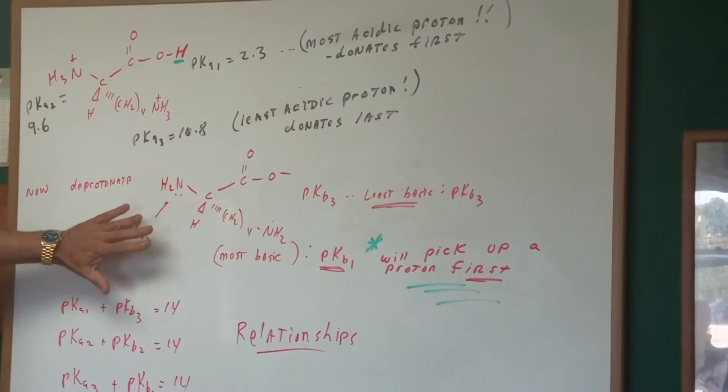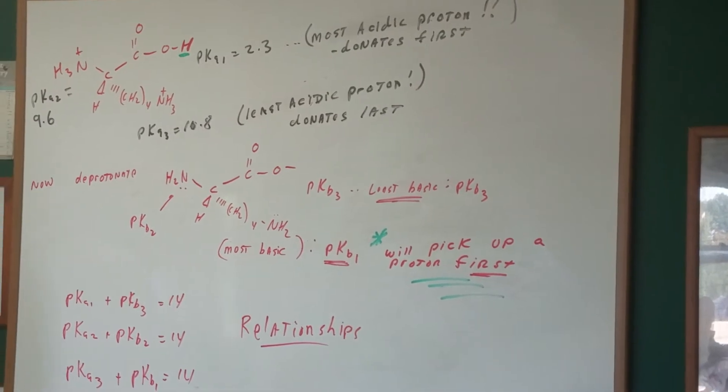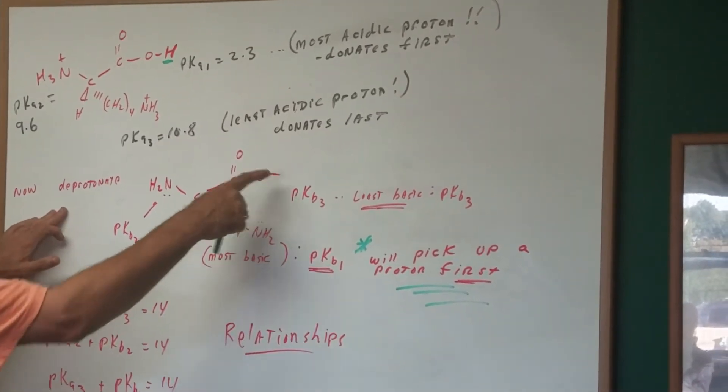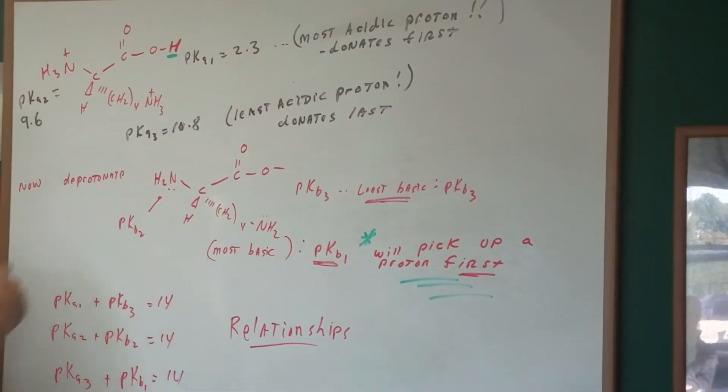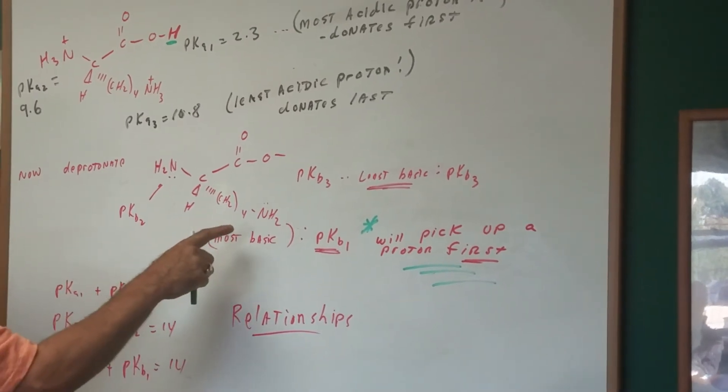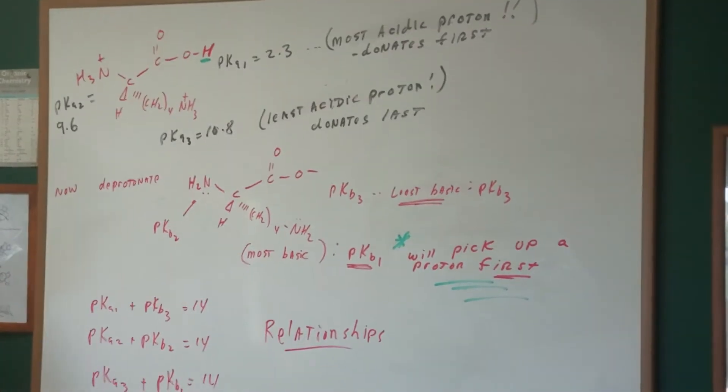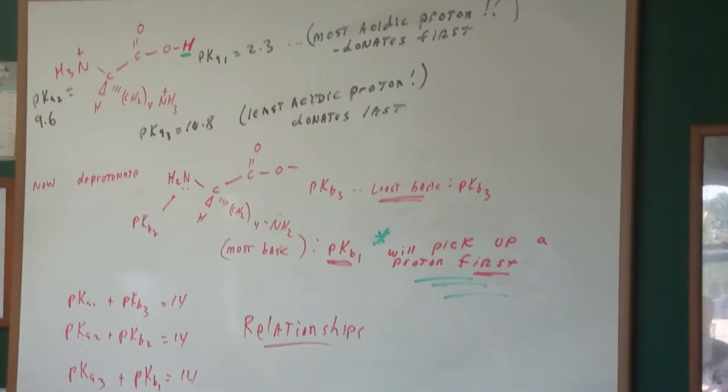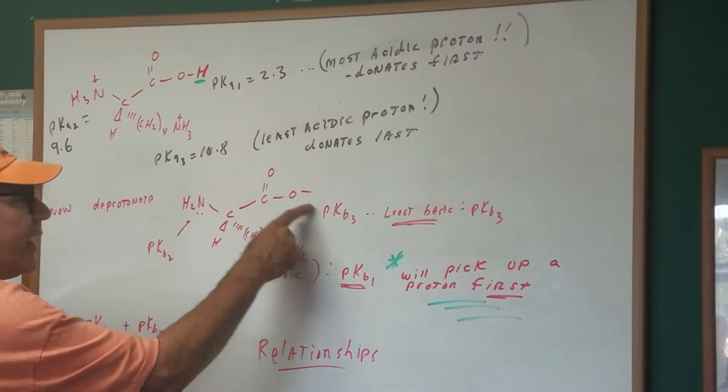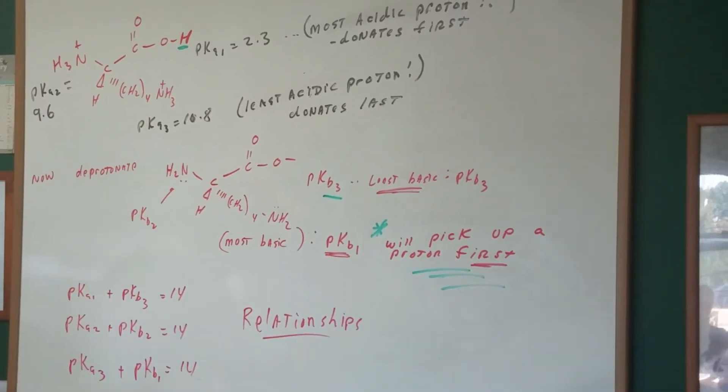If we fully deprotonate that, this is where it gets tricky. When we deprotonate it, we lost an H from here, we lost an H from here, and we lost an H from there. Now be careful. As you can see, the group that was the most acidic now becomes the least basic. So because it's the least basic, and we're talking about a base, I assign it as PKB3 because it's the least basic.